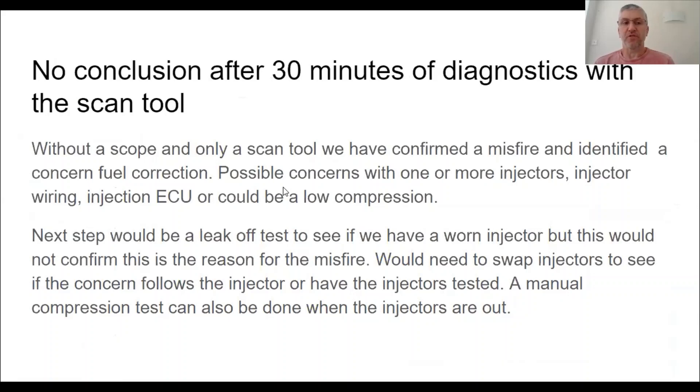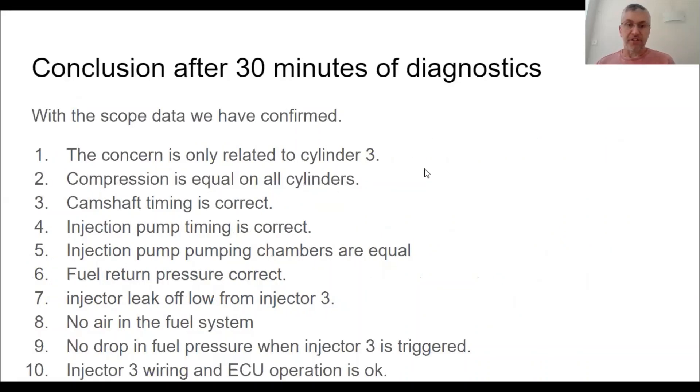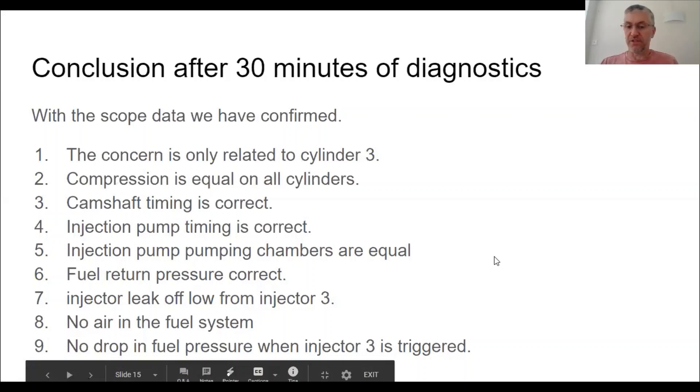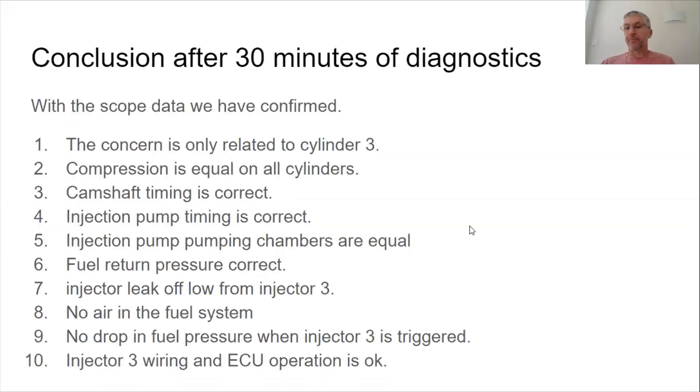So what we concluded, we have absolutely no conclusion after 30 minutes of diagnostics with just the scan tool alone. It tells us nothing. It only just points us in a particular direction. I would then have to go intrusive to find out exactly what's wrong. But after 30 minutes with the scope, I've confirmed the issue is only related to cylinder three. The compressions are equal on all cylinders. My camshaft timing is correct. My pump injection pump timing is correct. The injection pump pumping chambers are all equal and working. The fuel return pressure is correct. My injector leak off is low on injector three. There's no air in the fuel system. There's no drop in the fuel pressure when cylinder three is triggered. And my injector three wiring and ECU is operating okay.